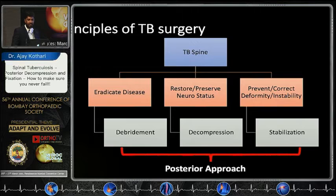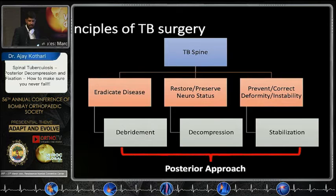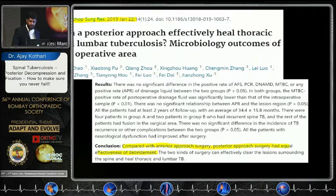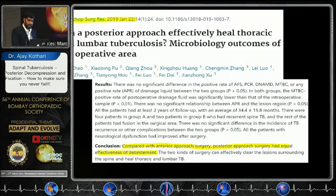We all know the basic principles of TB surgery: eradicating the disease, restoring and preserving as much as possible, and preventing deformity. What we need is debridement, decompression, and good stabilization. Can we do it with only a posterior approach? Initially in the 20th century, we saw a lot of anterior surgeries for TB — the anterolateral decompression was one standard operation, the Hong Kong operation, and many other anterior surgeries.